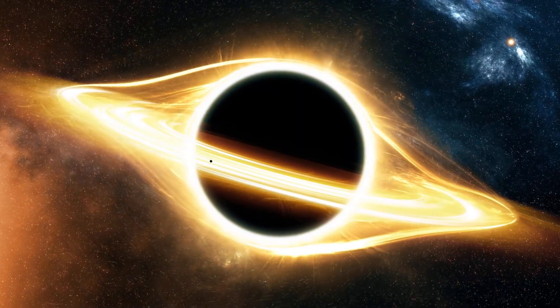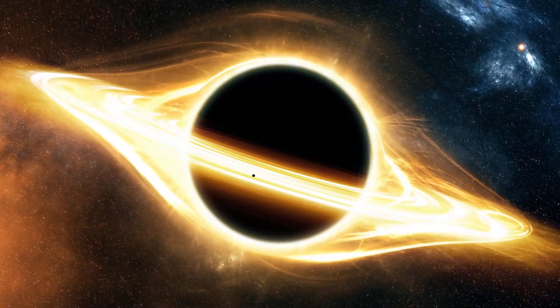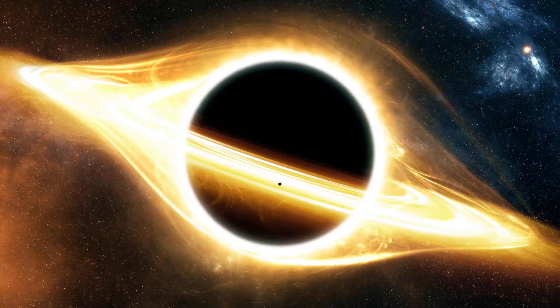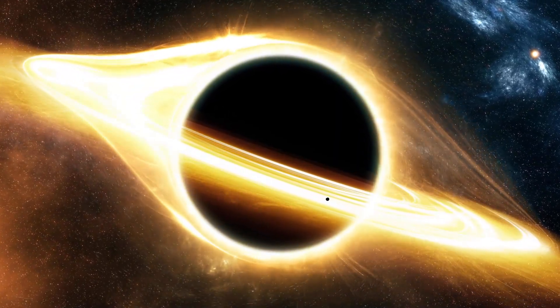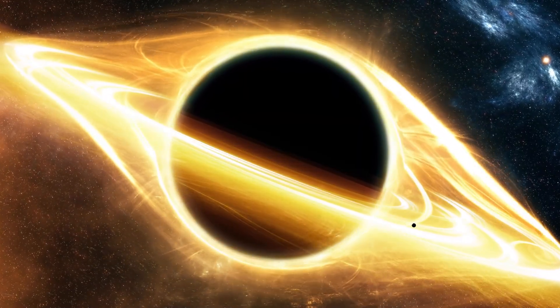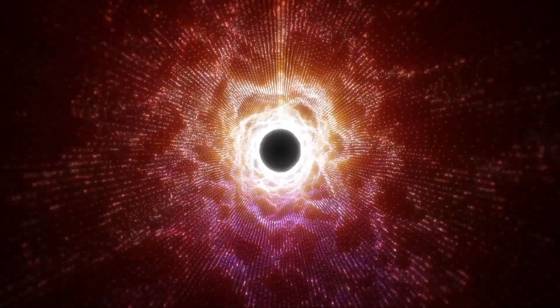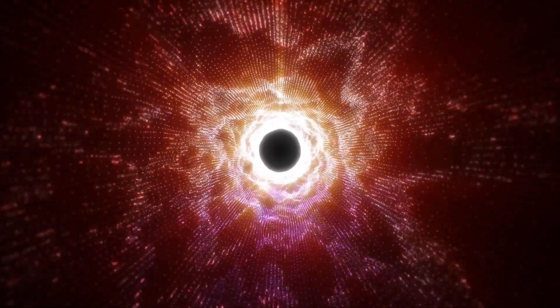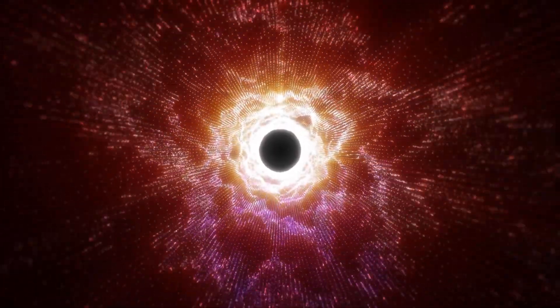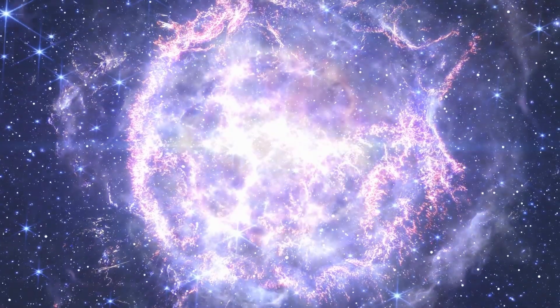The defenders of collider safety pointed again to the cosmos. If such black holes could be created, they argued, then cosmic rays striking Earth's atmosphere would have done so billions of times over. And yet, Earth still stands. It is a strong argument. But it relies again on absence, on what has not been observed. It assumes conditions in the collider are no different than those in space. It assumes what nature does at random is the same as what we engineer with precision.